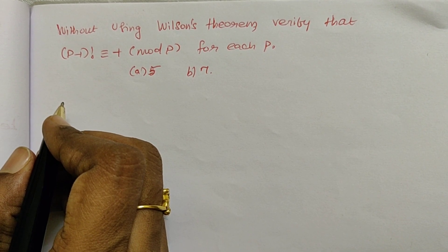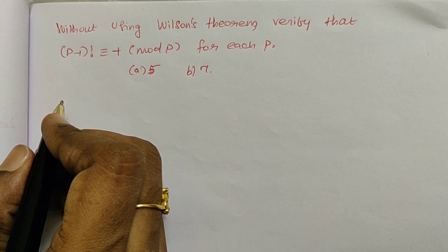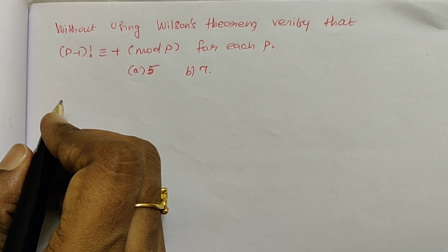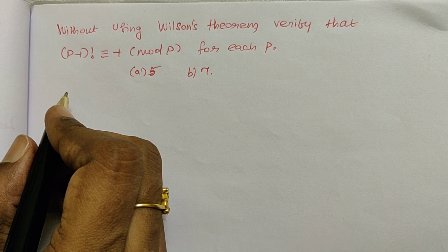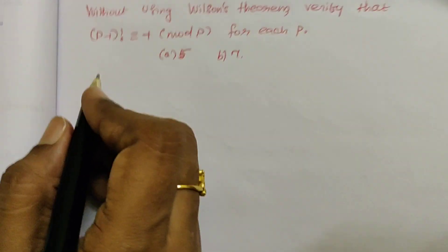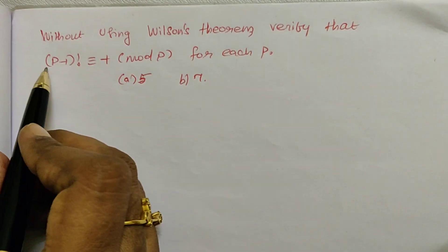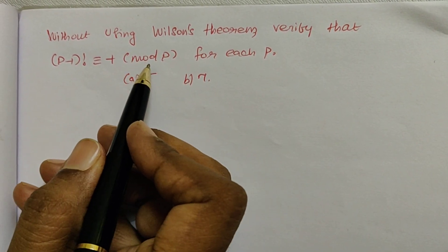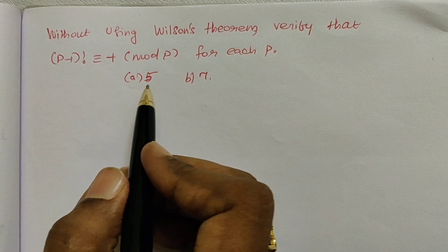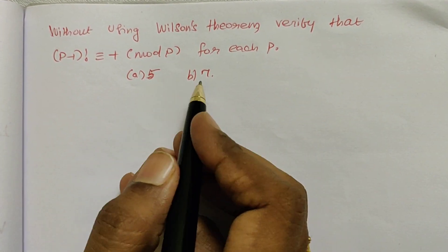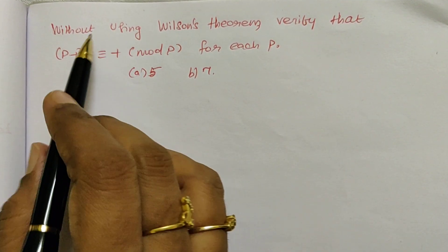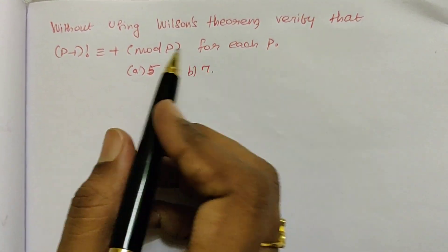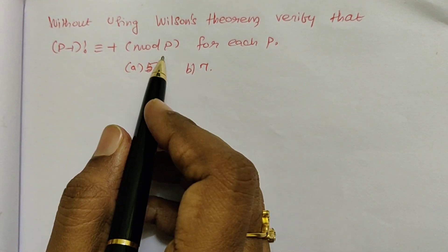Good morning students. In this video, we are going to study problems based on classical theorems and multiplicative functions. In this first problem, they asked to verify the congruence relation that is (p-1)! ≡ -1 mod p for each p, when p takes 5 and p takes 7, and also without using Wilson's theorem, you have to verify the congruence relation.